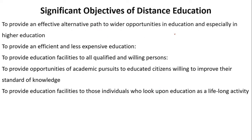The main objective of distance education is to provide an effective alternative path to wider opportunities in India, especially in higher education. India's population is more than 135 crores, and it is not practically possible to provide conventional education to each and every person. Distance education provides wider opportunities — whoever is interested and willing can enroll. It is efficient and less expensive: efficient because it is flexible and you can study whenever you have time, and less expensive compared to regular university fees.